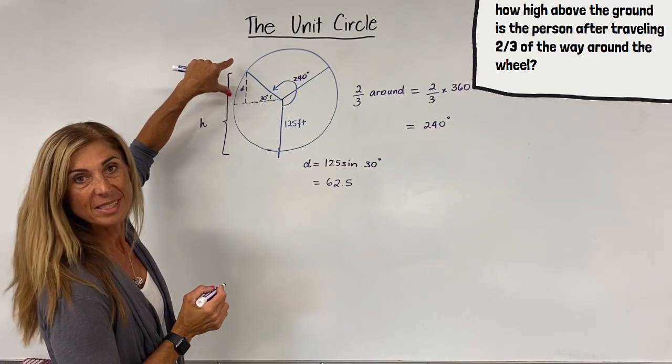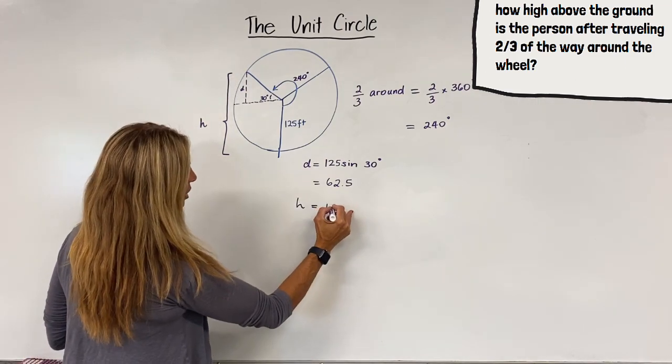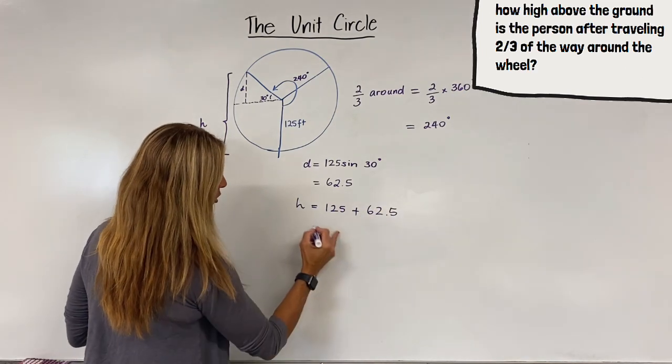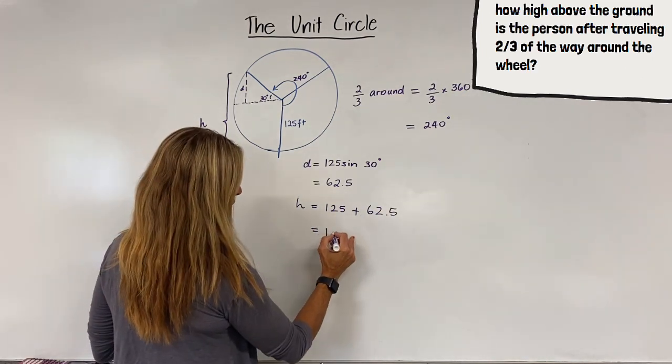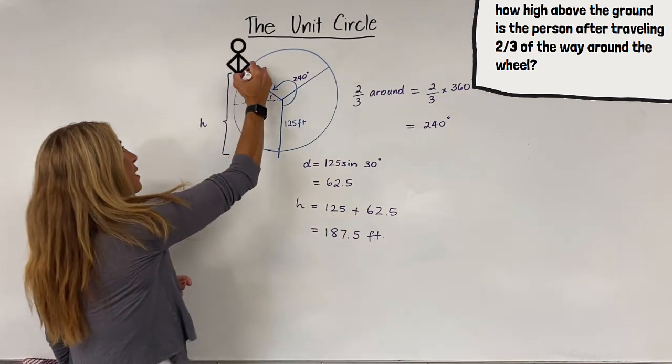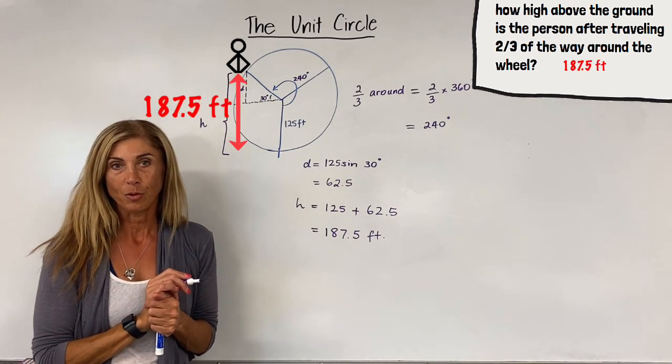However, that was just the distance from our nine o'clock position. So our height is actually the 125 feet in addition to the 62.5 feet, which gives us 187.5 feet. So the person sitting right here is 187.5 feet above the ground.